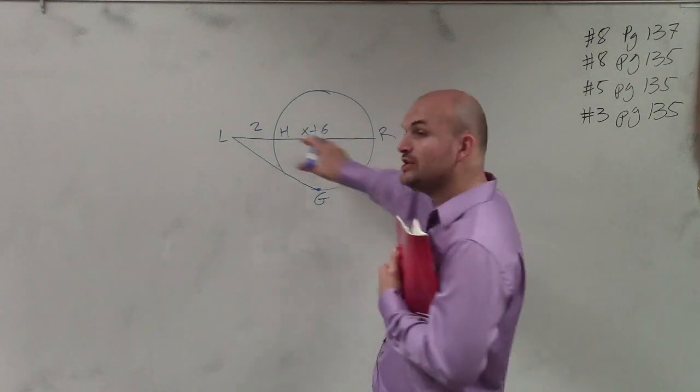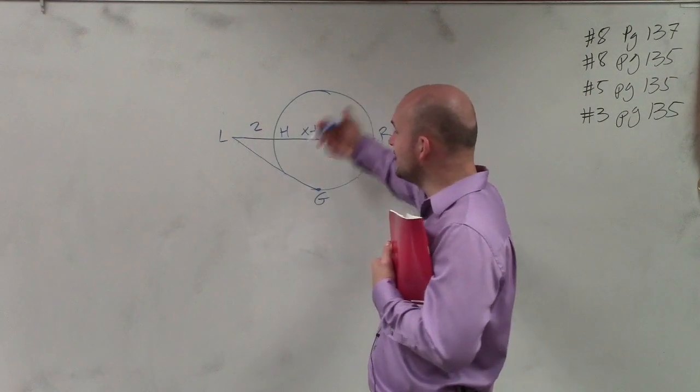So you'd want to make sure you have this written down. When you have a tangent and a secant line, there is a relationship between their sides.